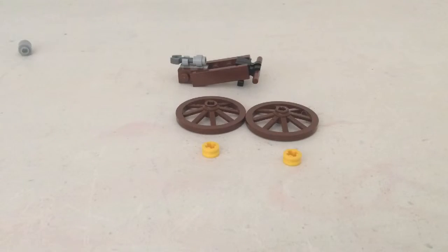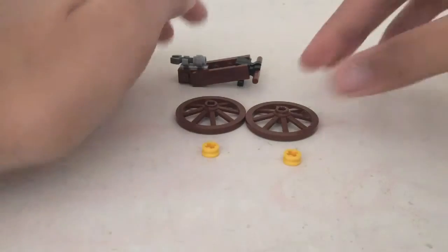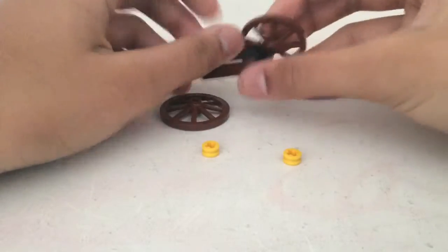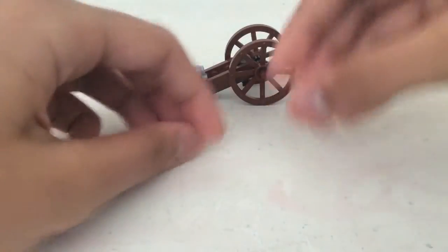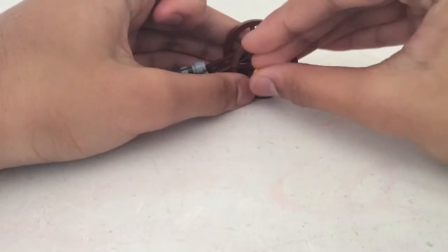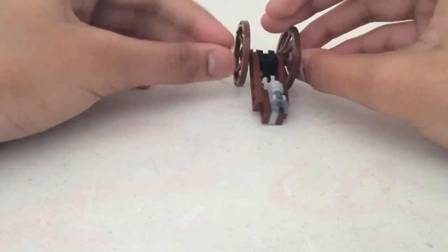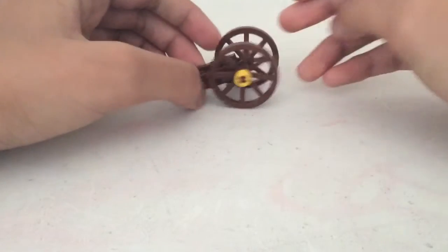Here's the third part, and this is really easy. First, we need to put these wheels over here. And then, you need these parts to support the wheels that don't fall off. And there it is.